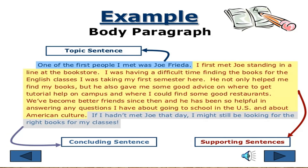Moving towards the body paragraph, the topic sentence is: 'One of the first people I met was Joe Freda.' The writer talks about his friend's name, his qualities, and their experiences together — these are the supporting sentences. Then at the end of the paragraph, there is a concluding sentence: 'If I had not met Joe that day, I might still be looking for the right books for my classes.' This explains everything about his friend.